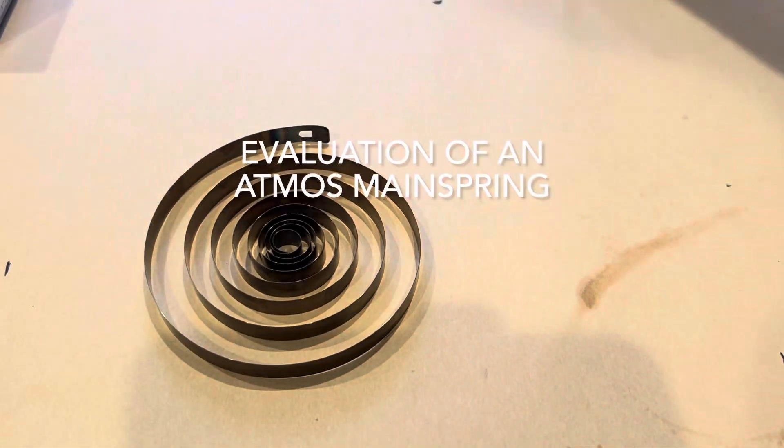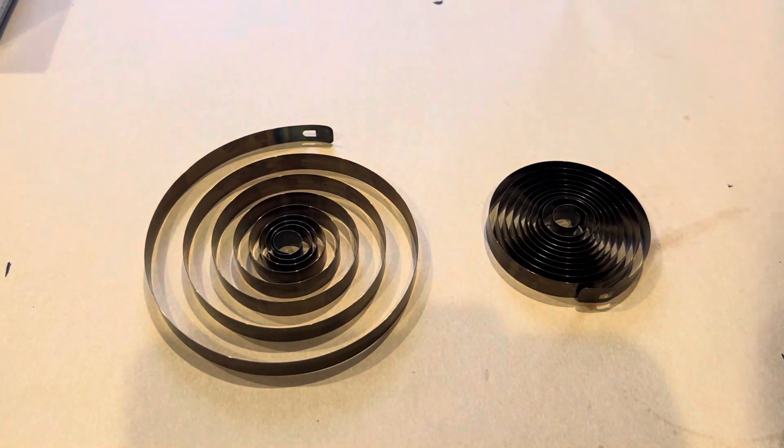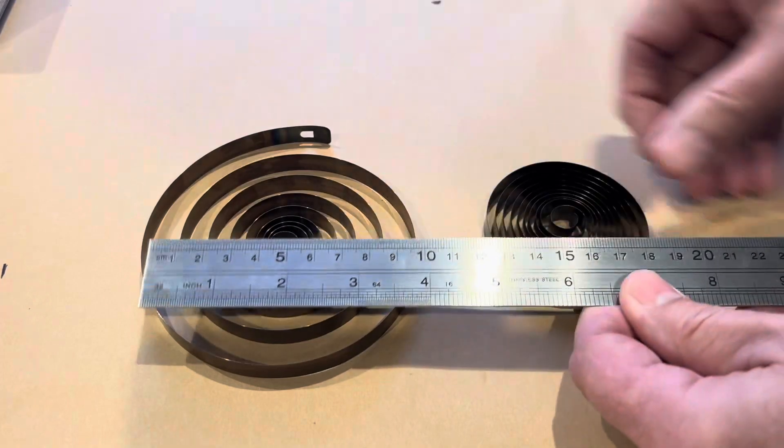Evaluation of an Atmos mainspring. We have two mainsprings from 528 models both within the same decade. Notice how big the spring on the left is and how tight the spring on the right is.